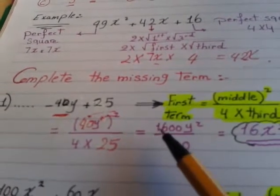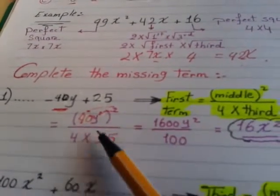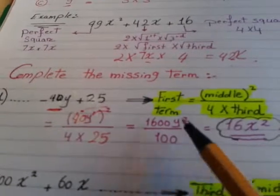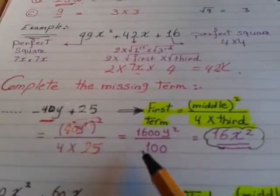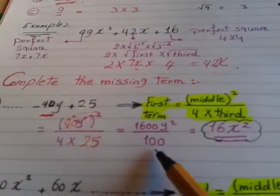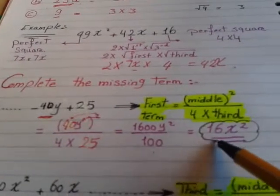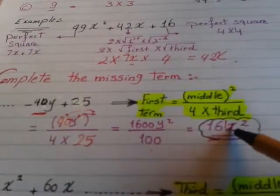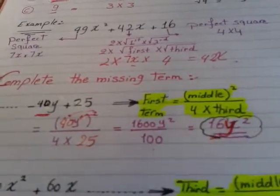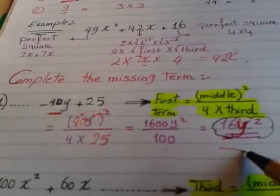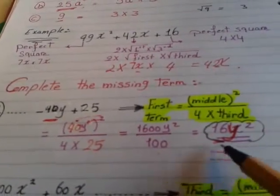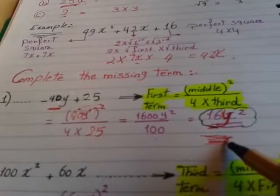So here 40 power 2 is 1600 and Y to the power 2 is Y power 2 over 100. You can simplify 1600 over 100 on your calculator. You will get 16 direct. And don't forget to drop the Y². So the middle term is here. Here is 16Y².